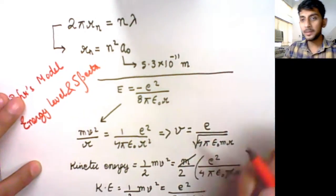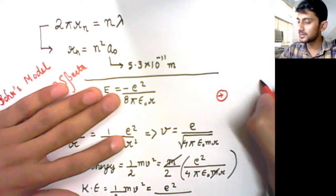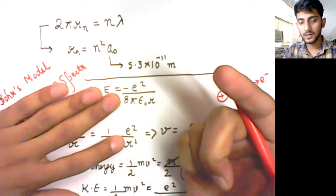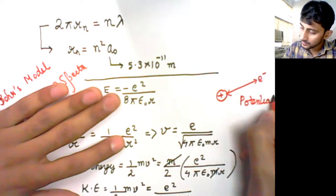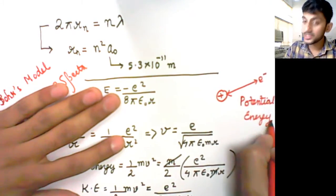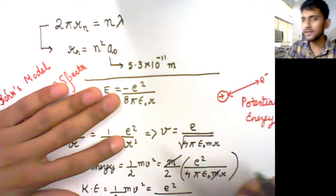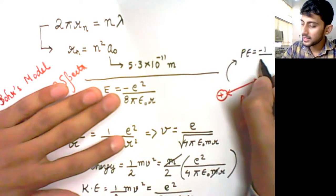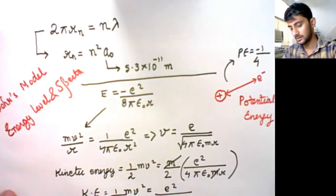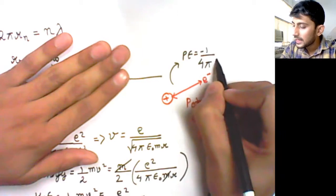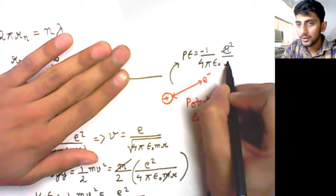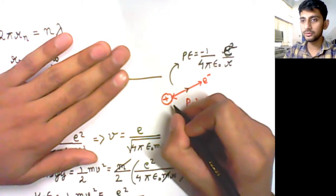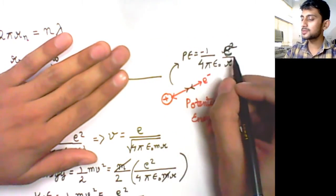Because you have a positive-negative charge system — a positively charged nucleus and a negatively charged electron — such a system will always possess potential energy due to its position. From Coulomb's law, the potential energy is given by −(1/4πε₀)(e²/r). The negative sign is because there is an attractive force between the two.